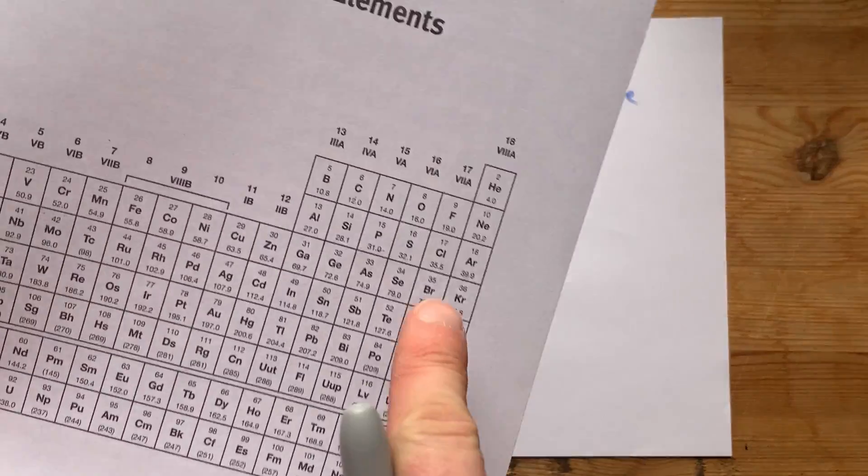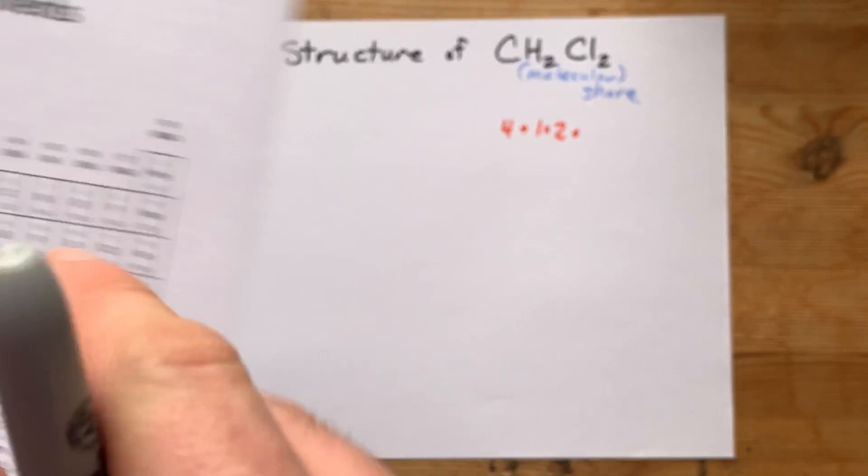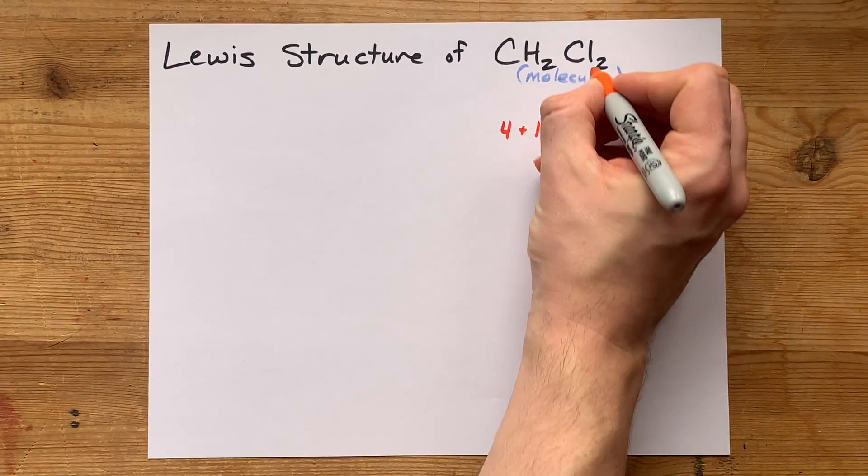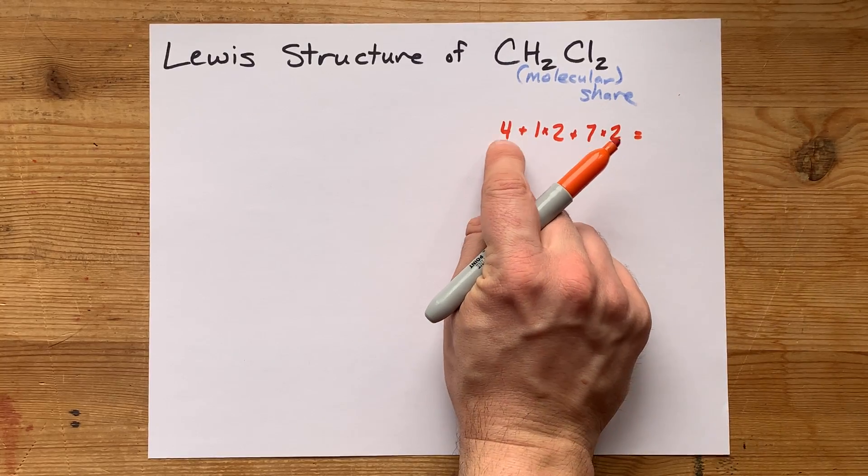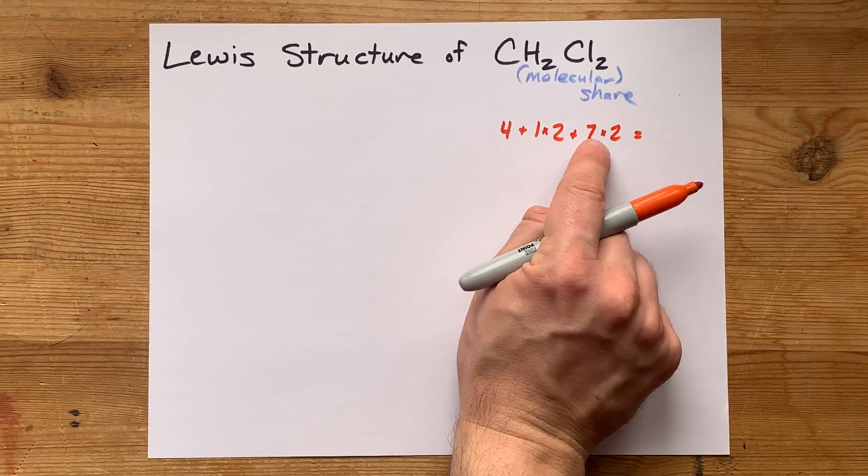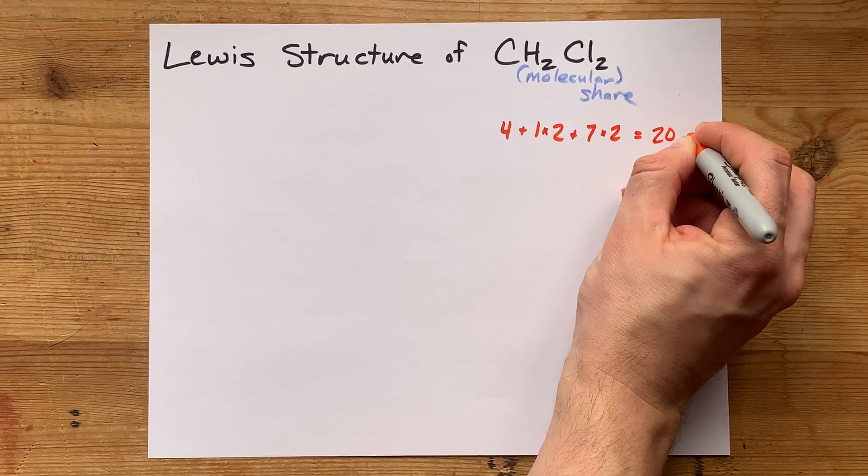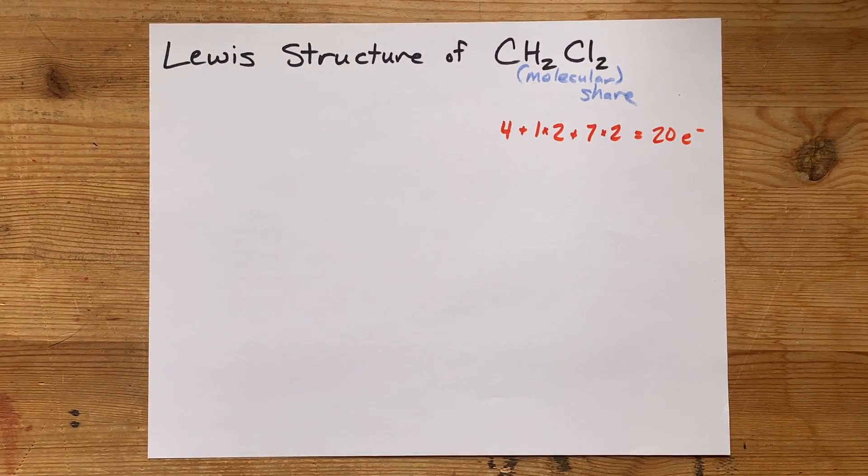And I'm going to add on, chlorine's in group 17. So it brings seven valence electrons, and there's two of them as well. So I got 4 plus 2 plus 14, which makes 20 electrons total that I'm going to deal with.